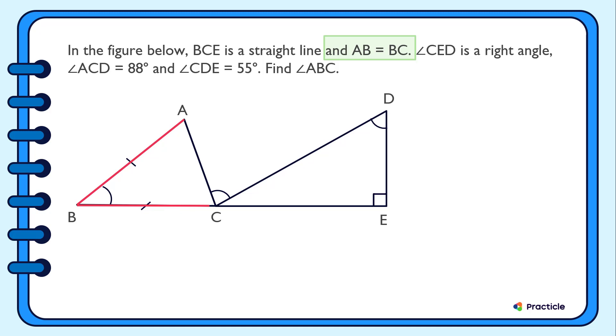And once you know that, we can tell that the base angles, angle BAC and angle BCA, must be the same. Because the base angles of an isosceles triangle are always equal.